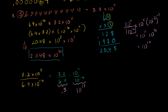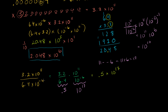Another way to think about it: if you have the same bases — 10 in this case — and you're dividing them, you take the one in the numerator and subtract the exponent in the denominator. So it's 11 minus negative 6, which is 11 plus 6, which equals 17. So this division problem ended up being equal to 0.5 times 10 to the 17th.